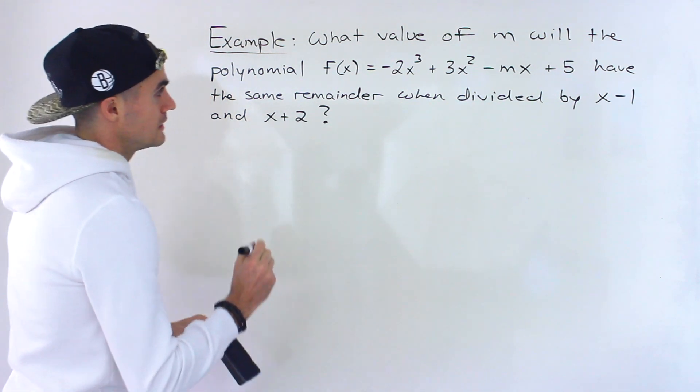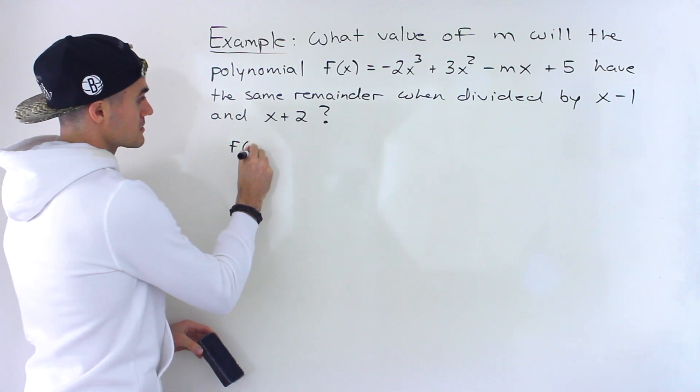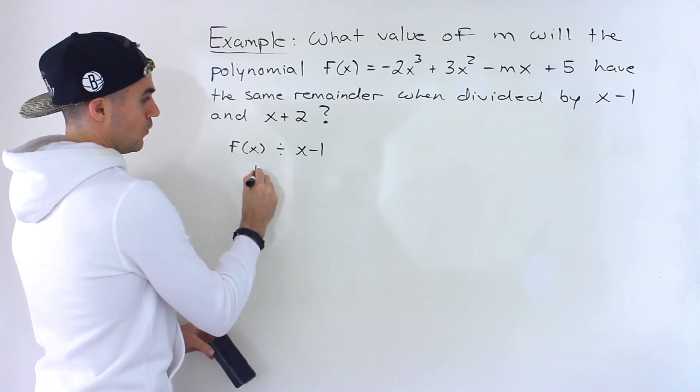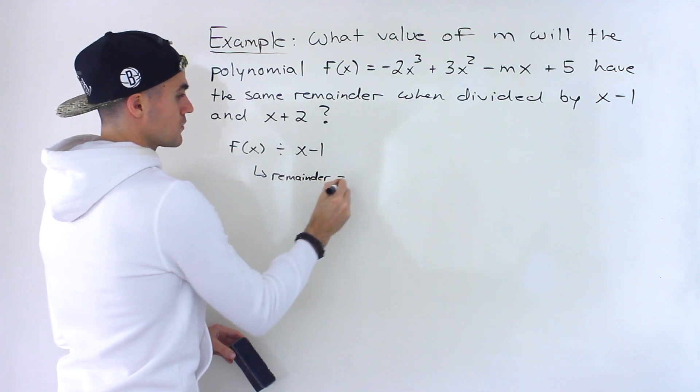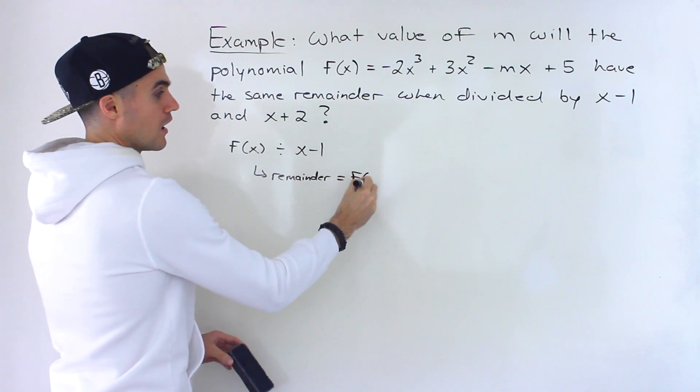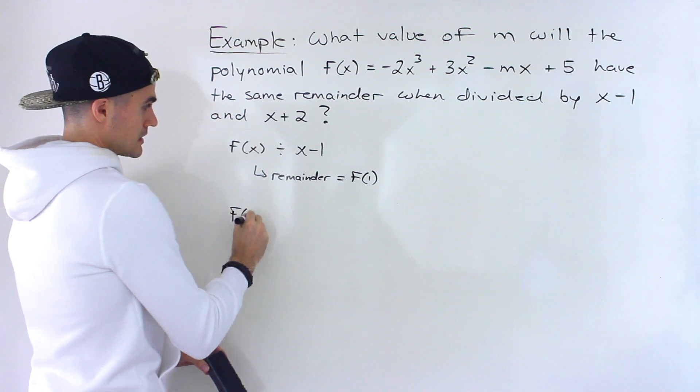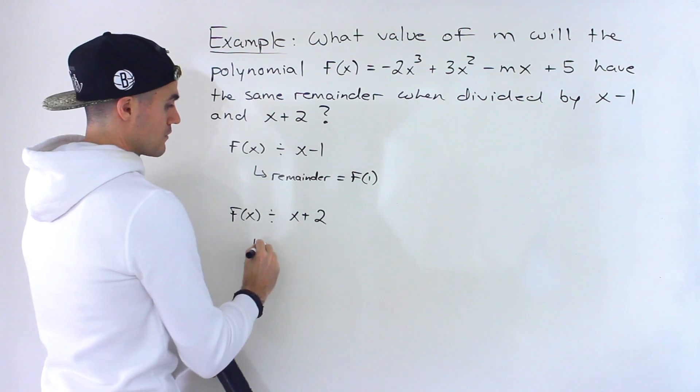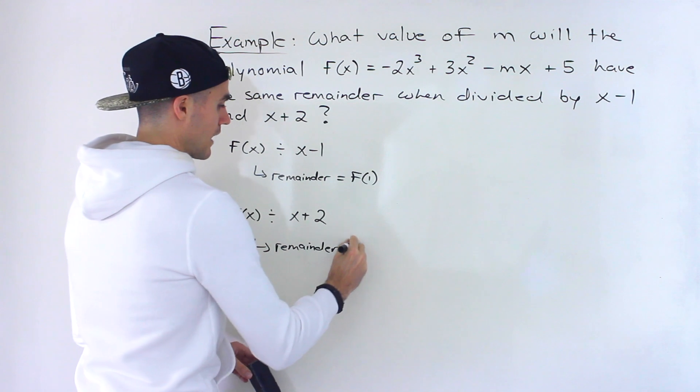In this case we know that if f(x) is divided by x - 1, by the remainder theorem, what's the remainder going to be? Well, it's going to be f(1). Now if f(x) is divided by x + 2, by the remainder theorem what's the remainder going to be? Well, it's going to equal f(-2).